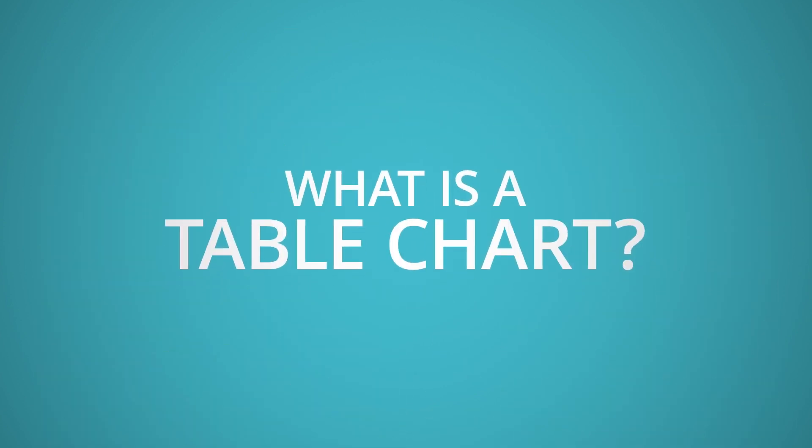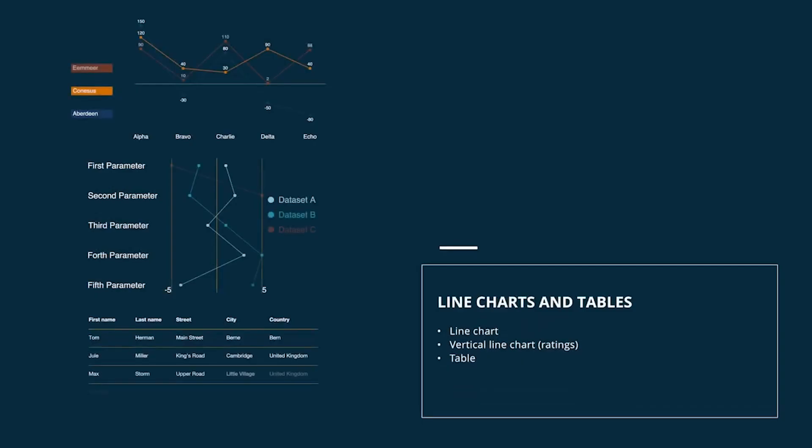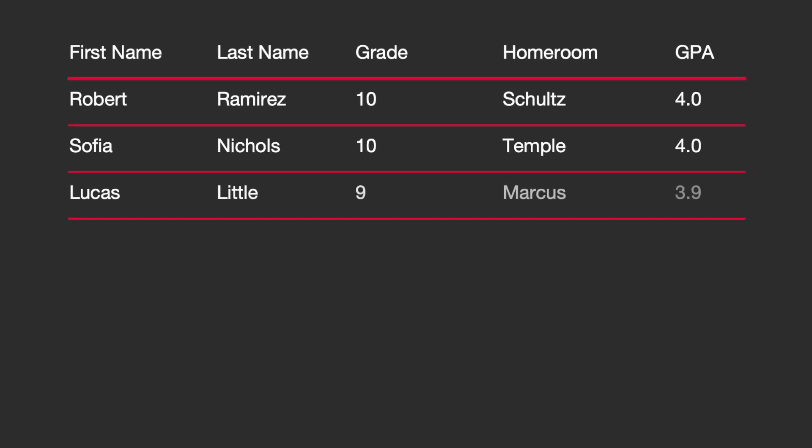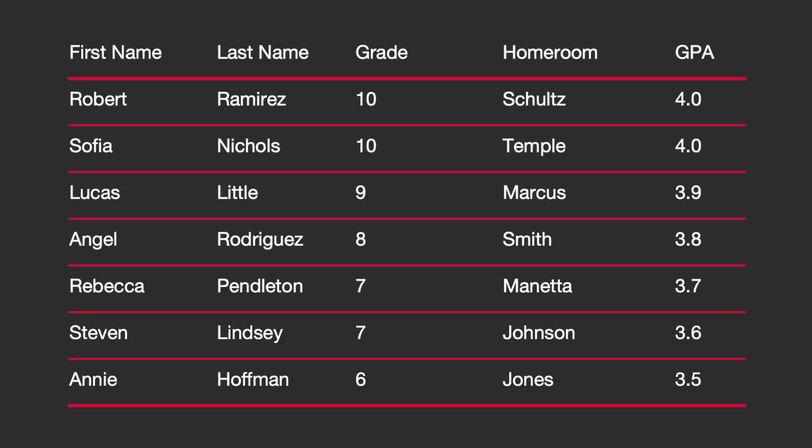First off, what is a table chart? A table chart is a means of arranging text data into rows and columns. You can use it anywhere you just need a table, even without numbers.